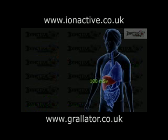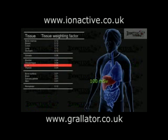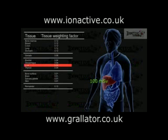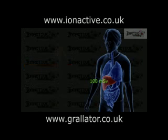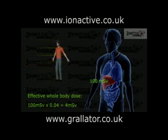If the same radioactive particle were to be concentrated in the liver, the weighting factor is 0.04 rather than 0.12, indicating a lower susceptibility to detrimental effects. In this case, the risk would be the same as those that would arise from a whole body dose of 4 mSv.